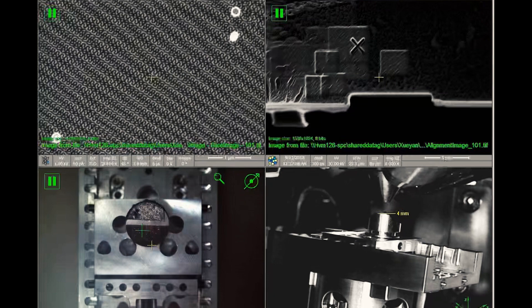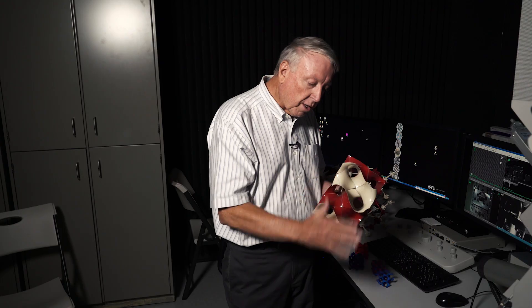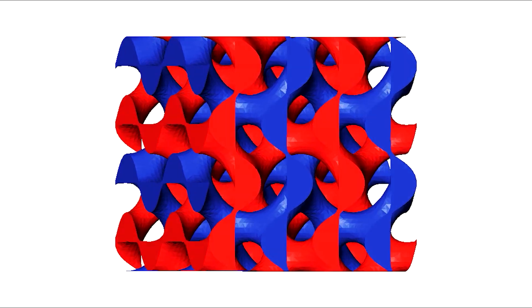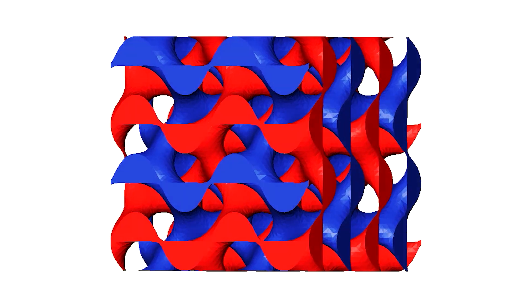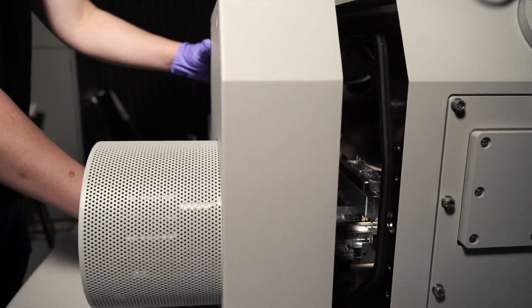And so we use a technique called slice and view. We slice and view and then we stack those slices up and we can make a three-dimensional reconstruction. And we've been interested in measuring the surface of this gyroid material using a technique like this.